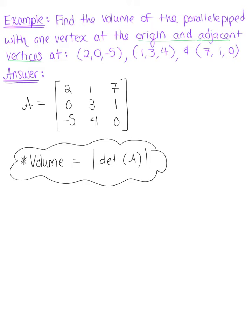So we can use our definition. We can say that the determinant of matrix A is going to be equal to 2 multiplied by the determinant of the submatrix 3, 1, 4, 0, minus 1 multiplied by the determinant of the submatrix 0, 1, negative 5, 0, plus 7 multiplied by the submatrix 0, 3, negative 5, 4.